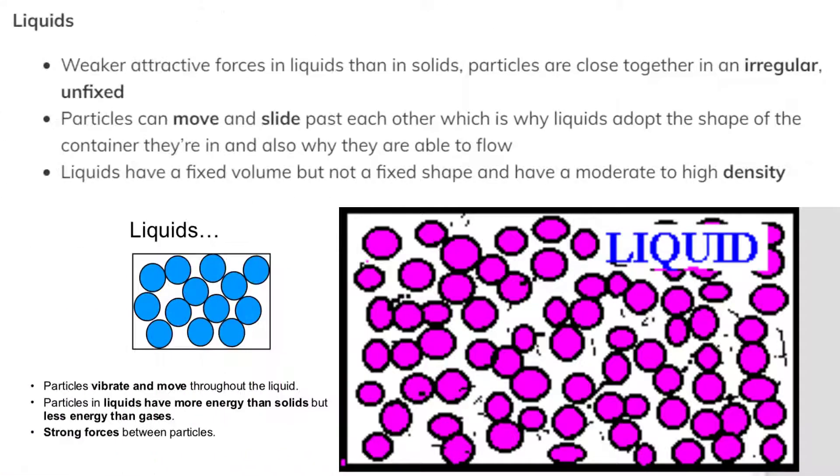In liquids, weaker attractive forces than in solids. Particles are close together in an irregular, unfixed pattern. Particles can move and slide past each other which is why liquids adopt the shape of the container they're in and also why they are able to flow. Liquids have a fixed volume but not a fixed shape and have a moderate to high density.